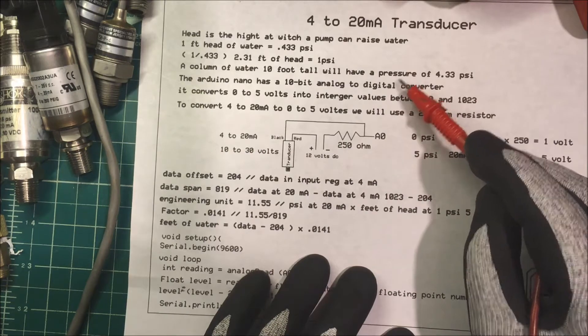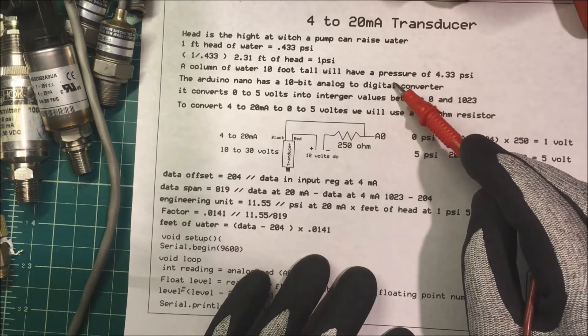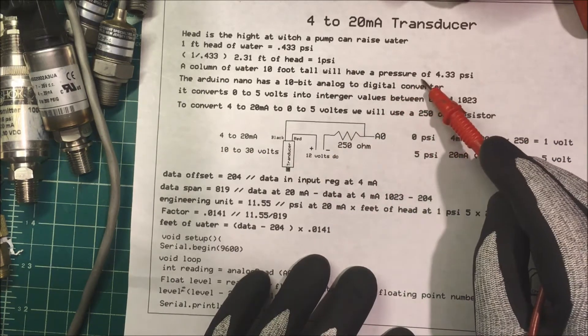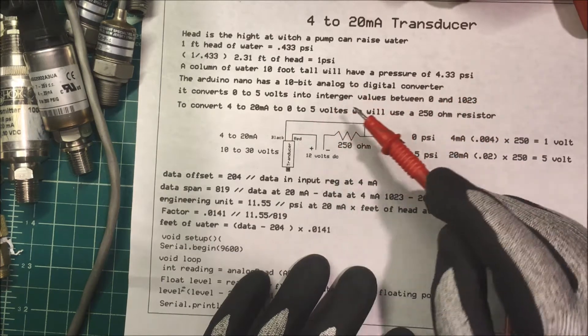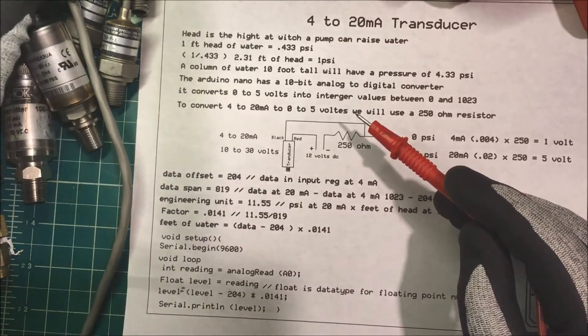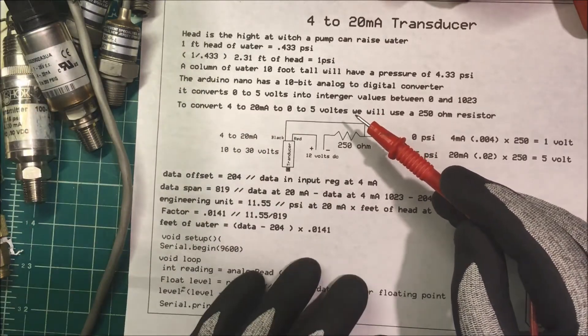Now I'm going to use an Arduino to measure the level in a tank and the tank is only 10 feet tall. So I'm going to use a transducer that's rated for 0 to 5 psi, 4 to 20 milliamps.